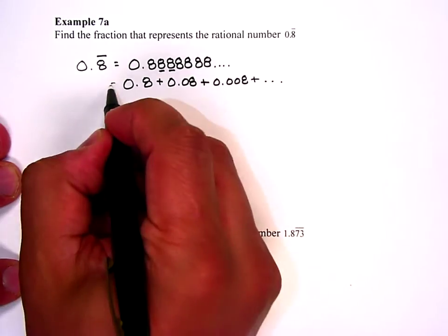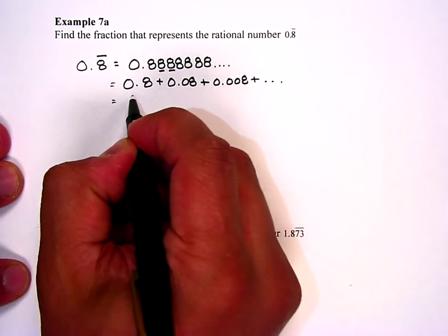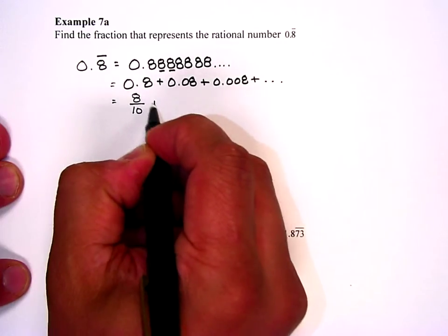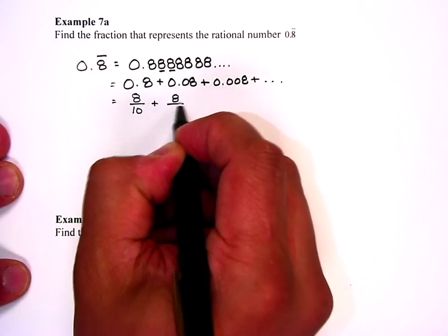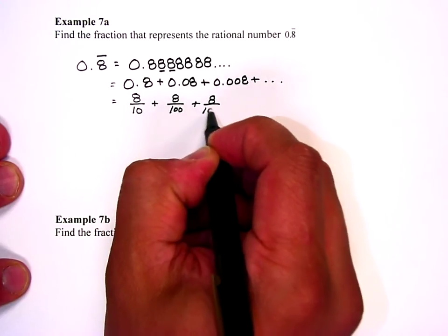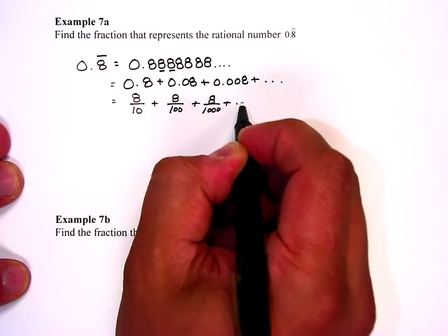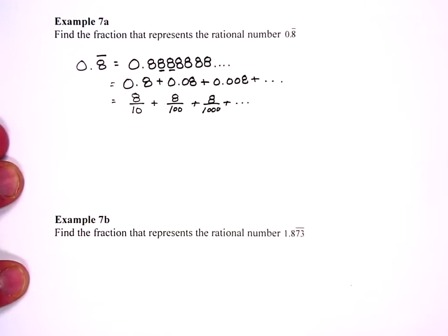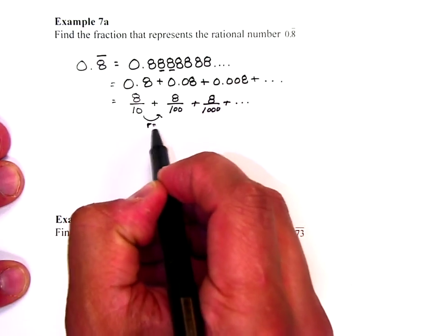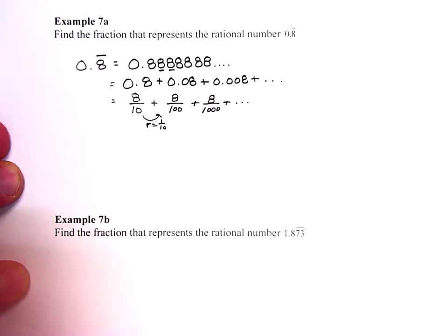Well if I think about these in terms of fractions, this is 8 tenths. Then I have 8 one hundredths and then 8 one thousandths. And if you write it that way you can see that it turns into an infinite geometric series where r is equal to one tenth.